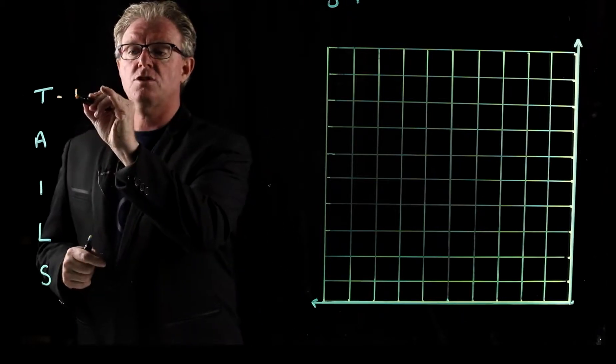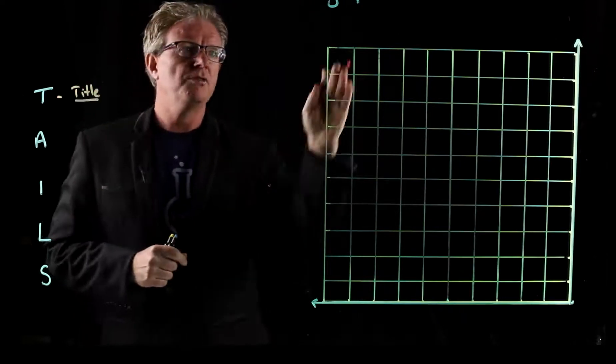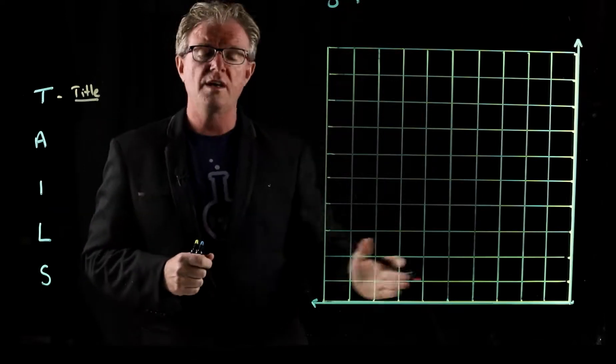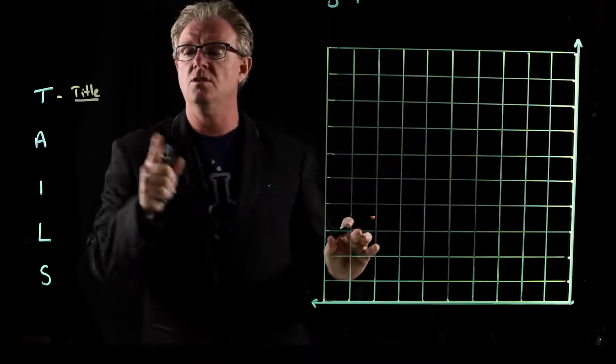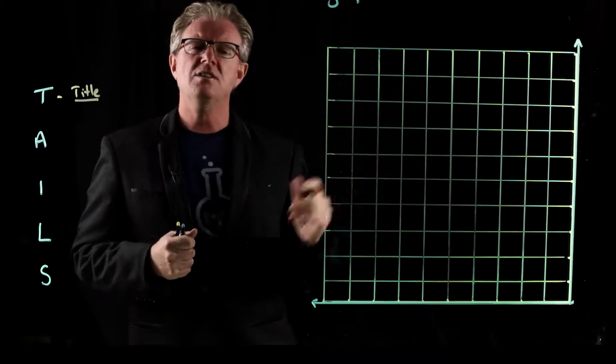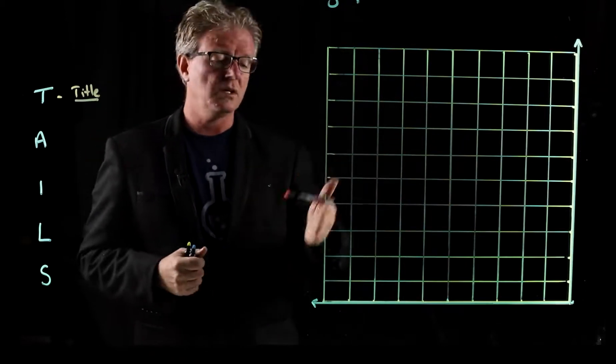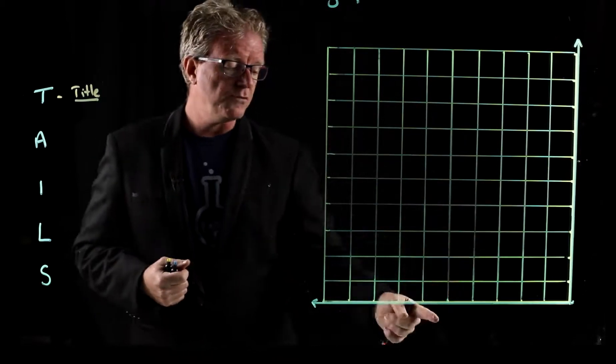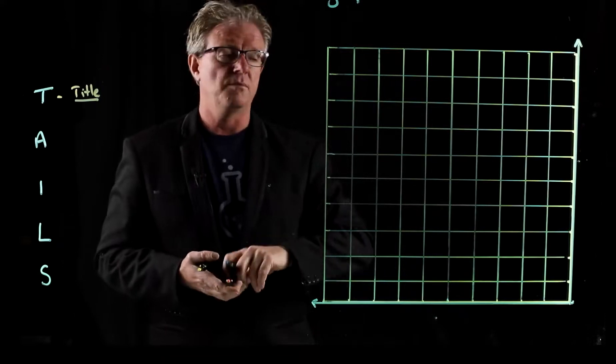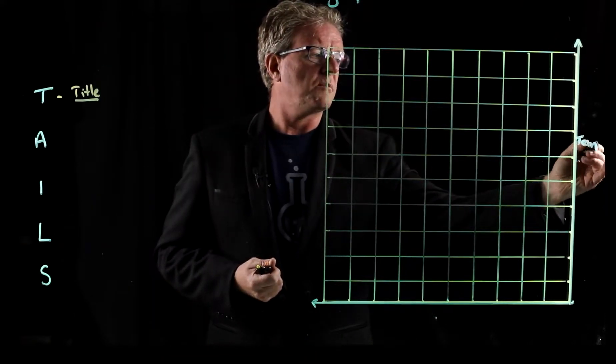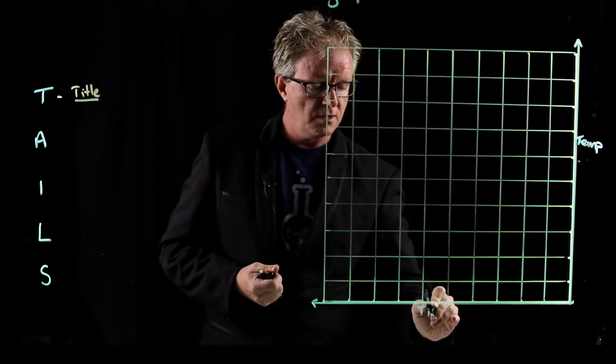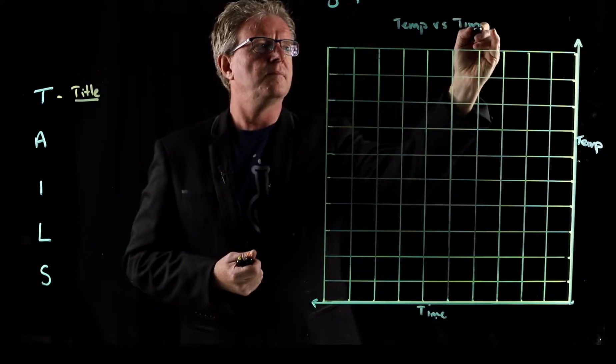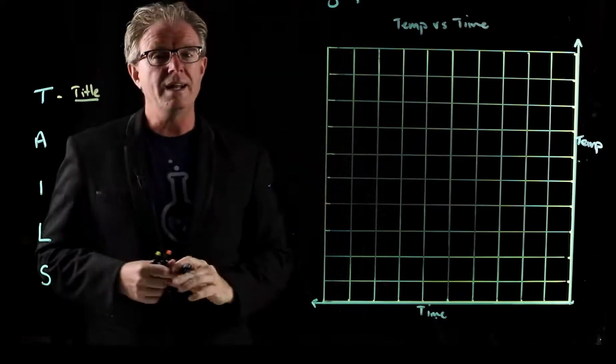Now T stands for title. Every graph must have a title. You want to tell the person looking at your graph what they're relating, what they're investigating and what the trends are. So the title tells you. Now you can't just do simple titles. Let's say we're going to do temperature versus time. So some students will go, oh yeah, we're measuring the temperature versus time. And so they'll just go, temp versus time. That's not a great heading.